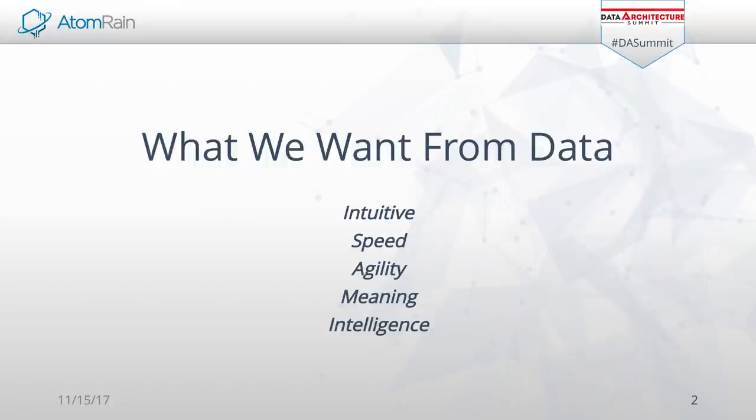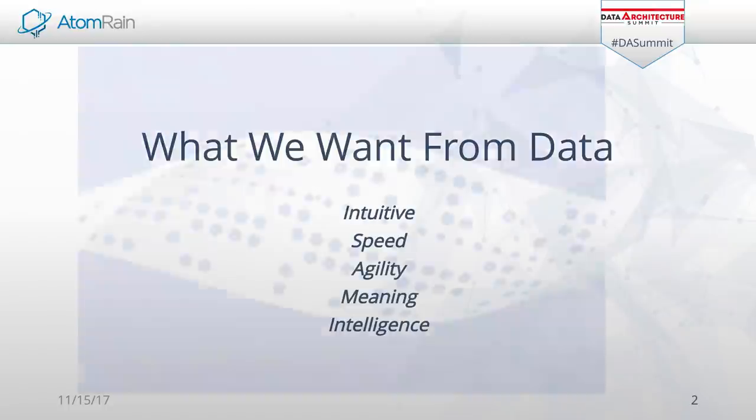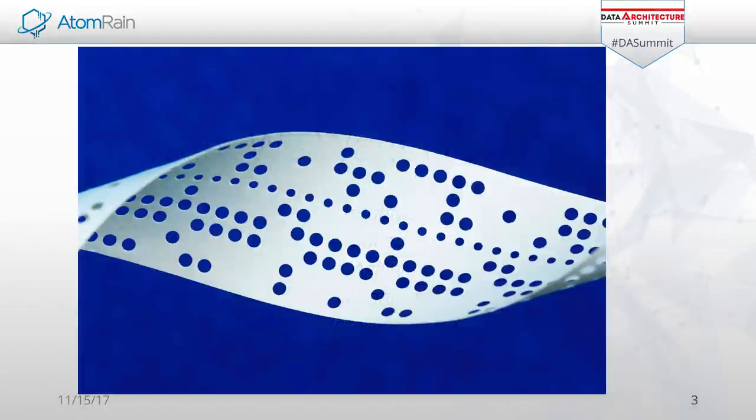We want it to be intuitive so that everybody across the organization can understand it. We need it to be fast because business is rapidly changing, our data is rapidly changing. We need it to be agile so that we can evolve as our business needs change. Our data models from yesterday don't work for today and won't work for tomorrow. We need to be able to get meaning and drive intelligence from it.